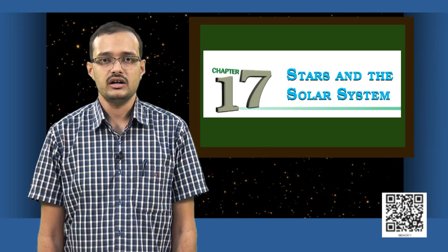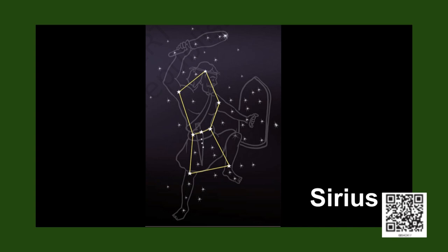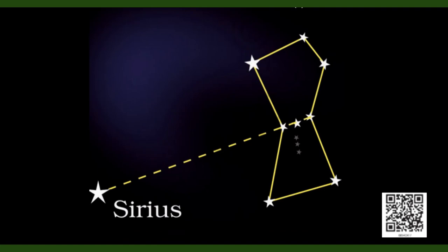Another constellation of interest is called the Orion or the Mahavyata. This is perhaps the most striking and the most beautiful constellations you can see in the night sky. As the name implies, the Orion looks like a human with a weapon or like a hunter. You can use this constellation to identify the brightest star in the night sky which is called the Sirius. If you follow the line formed by the three stars on the belt of the Orion towards the east, you find Sirius.